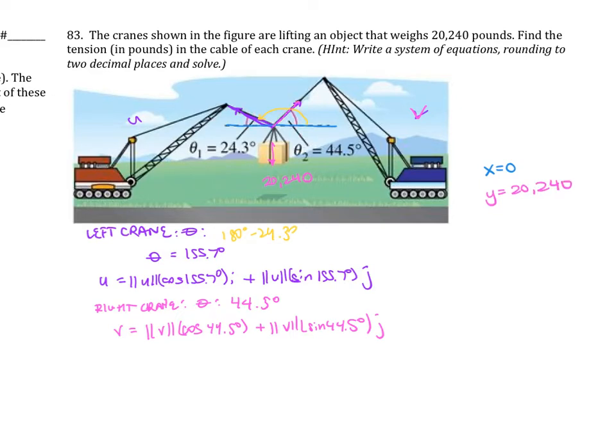The tension here is pulling up. They're both pulling at these angles, and they're lifting this object that is 20,240 pounds. The X is going to be our horizontal components, horizontal values, and the Y is our vertical values, our vertical components.